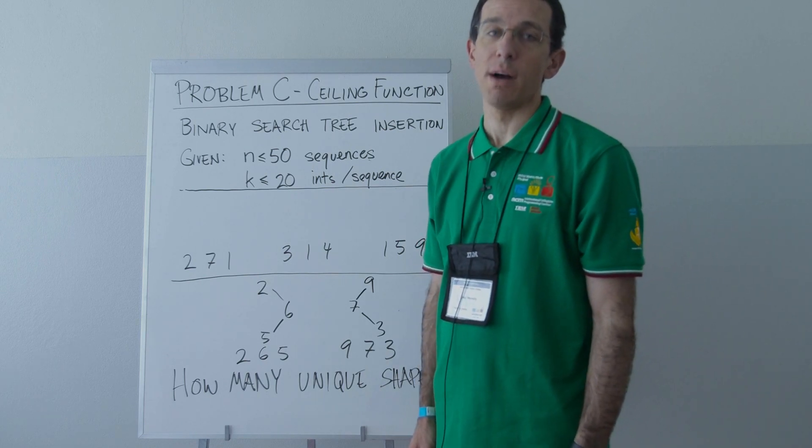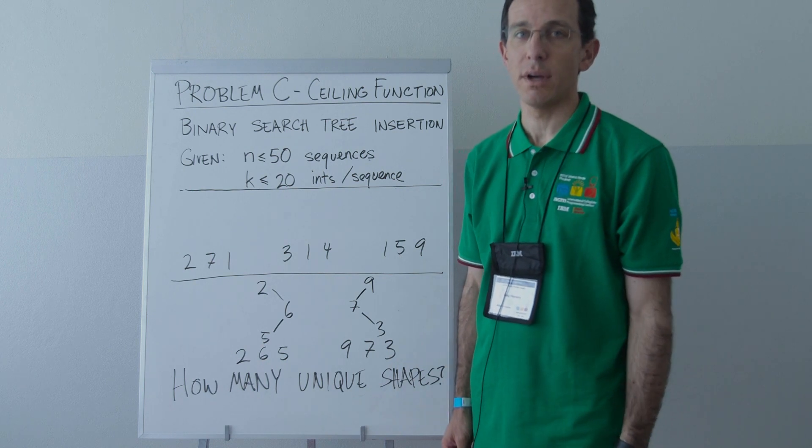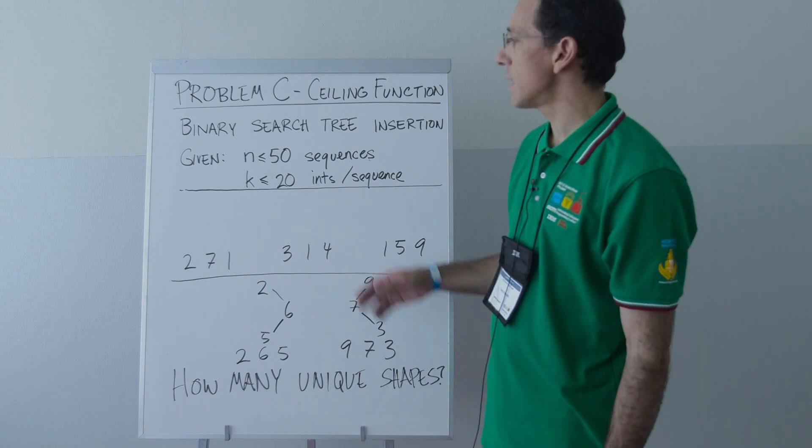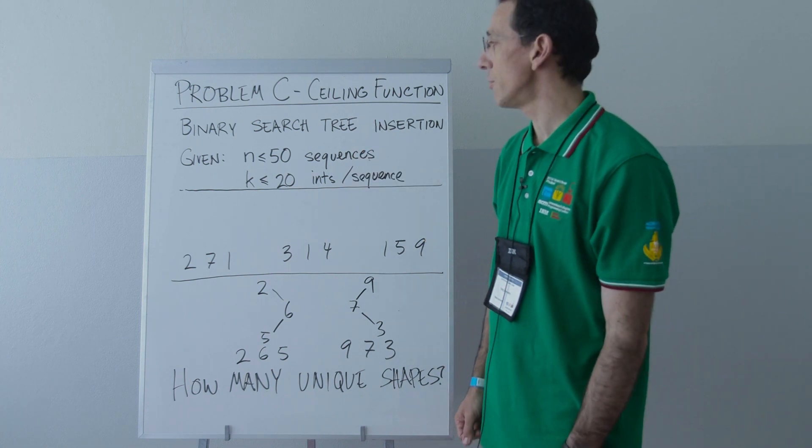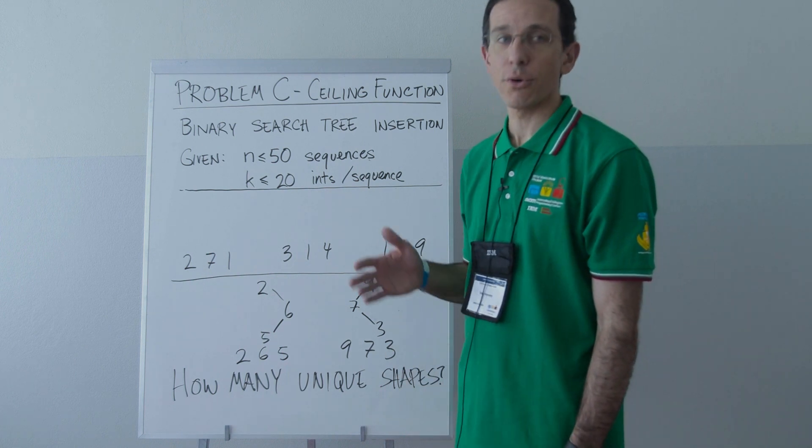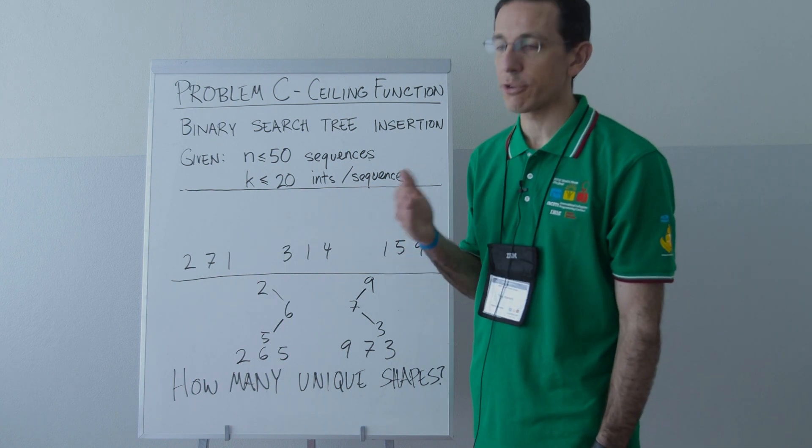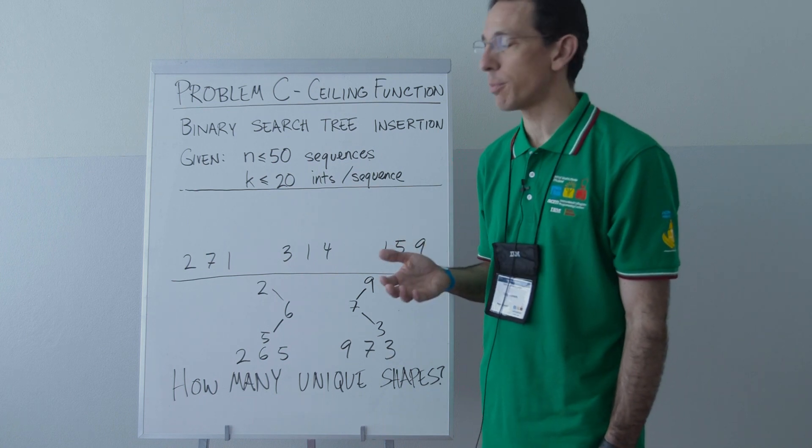This is the easiest problem of the problem set and it is designed to be solvable by all the teams. The key story here is to do binary search tree insertion. The story in the problem is almost irrelevant, so we're just going to ignore that and focus on the data you're given and what you're supposed to do with it.